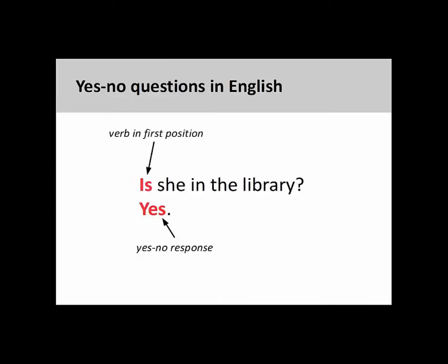English yes-no questions are characterized by the conjugated verb being placed in the first position, or at the very beginning of a sentence. Yes-no questions are so called because they do not demand a detailed response in the manner that interrogative words do. The simple yes or no suffices.